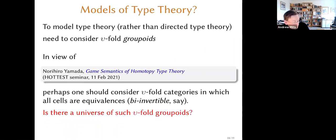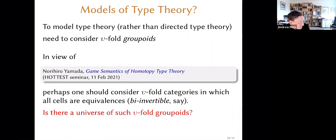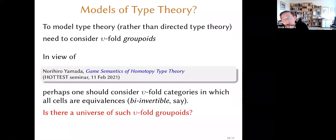Recently I attended virtually a HoTT seminar by Norihiro Yamada. He's claiming to have, within his game semantics model of type theory that he developed with Samson Abramsky, a model of homotopy type theory — a model of univalent universes. He's using some notion of strictly associative but non-strict-inverse kind of omega category in his category of games, which when I heard this seminar set me thinking about this stuff. The end result is me giving this talk.